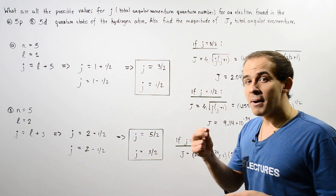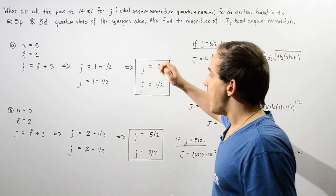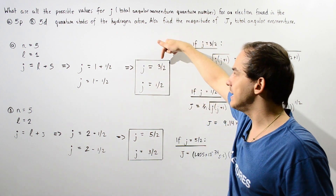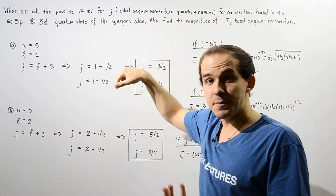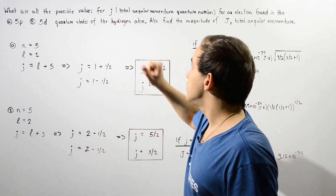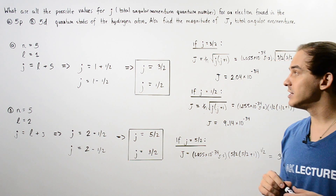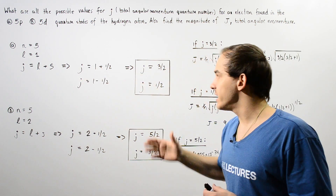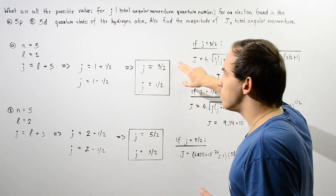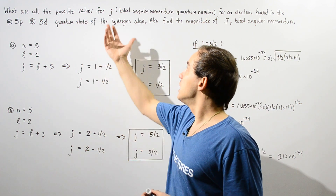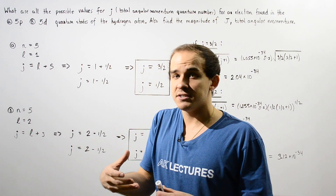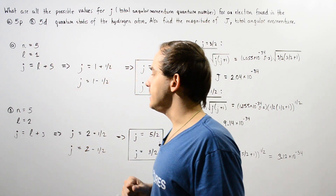Recall that the spin quantum number comes in two forms. We can either have a positive 1/2 spin, and that means J is equal to 1 plus 1/2, which gives us 3/2. Or the spin can also be negative 1/2, in which case J is given by 1 minus 1/2, which is equal to 1/2. So these are the two possible values for J — the total angular momentum quantum number for our single electron in the 5P state.